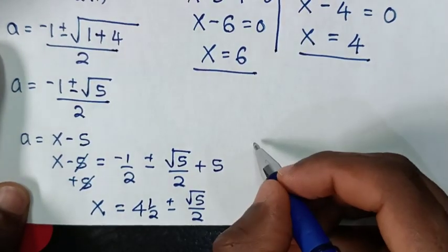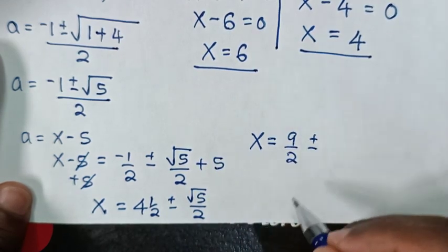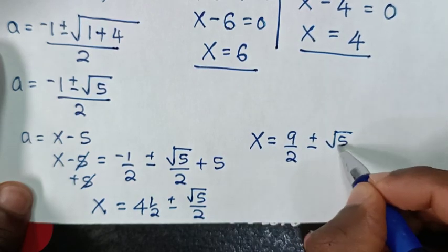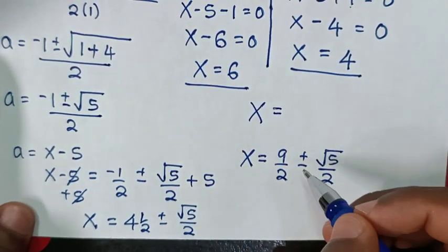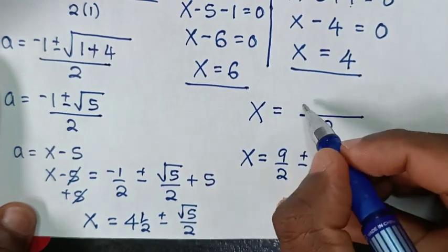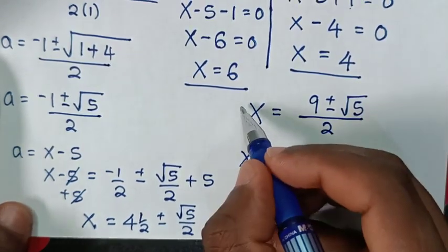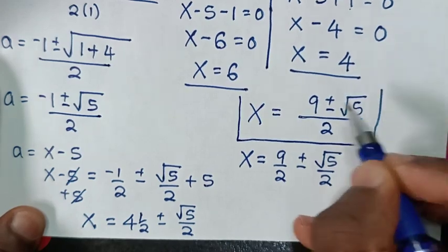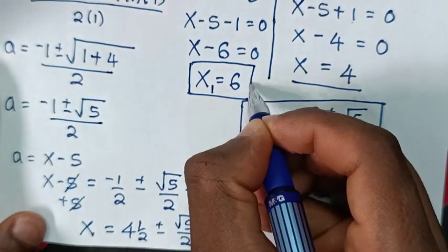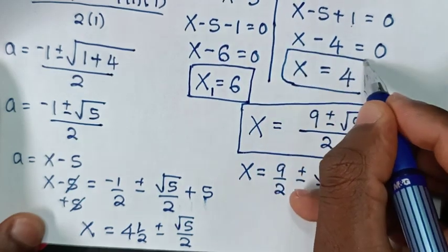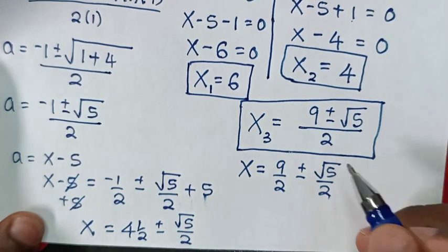Combining over a common denominator of 2, x = (9 ± √5) / 2. So we have three values of x: x = 6, x = 4, and x = (9 ± √5) / 2.